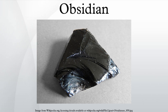Obsidian flows which may be hiked on are found within the calderas of Newberry Volcano and Medicine Lake Volcano in the Cascade Range of western North America, and at Inyo Craters east of the Sierra Nevada in California. Yellowstone National Park has a mountainside containing obsidian located between Mammoth Hot Springs and the Norris Geyser Basin, and deposits can be found in many other western U.S. states including Arizona, Colorado, New Mexico, Texas, Utah, Washington, Oregon, and Idaho.